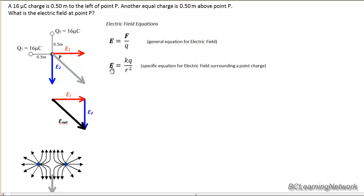And then our equation that's specific for point charges. And remember, that's what we're dealing with here. 16 microcoulomb Q1 is a point charge as is Q2. So this is the equation we want to focus, where Q is the charge that's creating the electric field, and R is the distance from the charge, the location of the electric field.